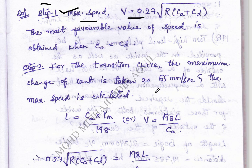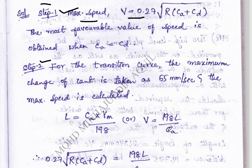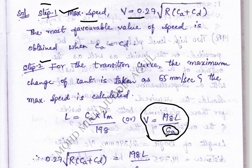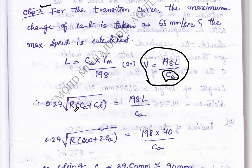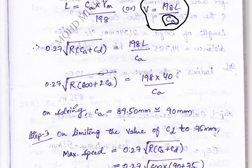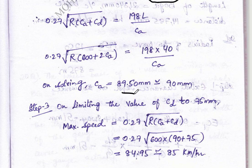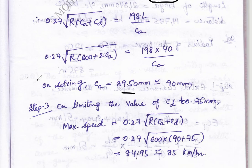Moving to step 2, we have to calculate maximum speed for 55 mm per second, which is the maximum, using the formula V equal to 198 L divided by CA. From this we calculate the CA value. We have all the values; substituting them we get the CA value.